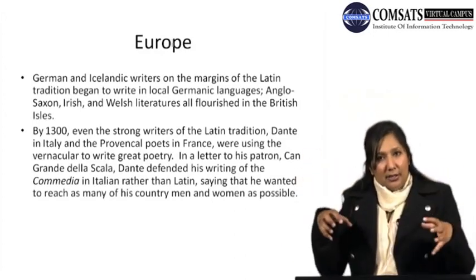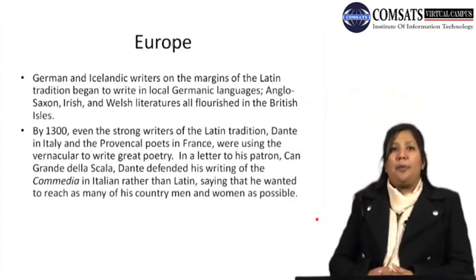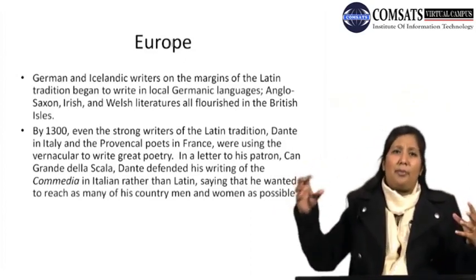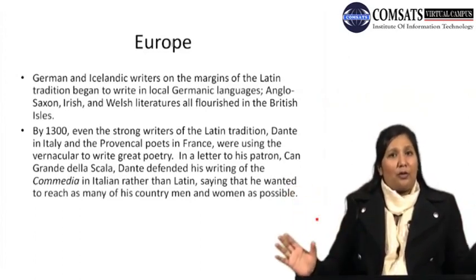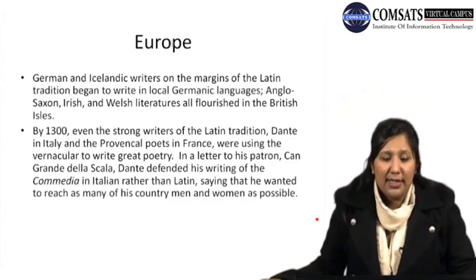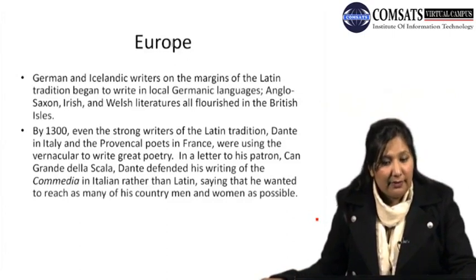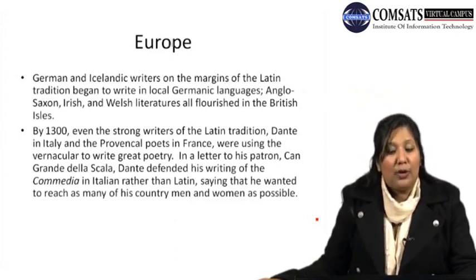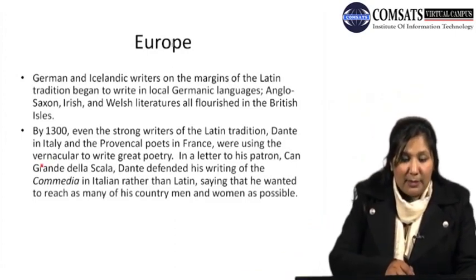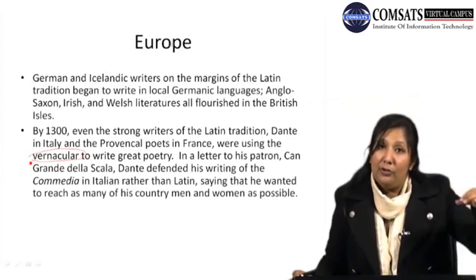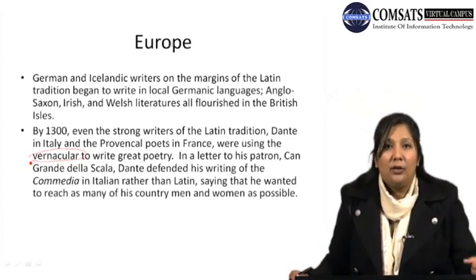There were different traditions and cultures in different parts of society. In India, language traditions came from Sanskrit, while in Europe there were two main groups: Germanic and Icelandic, coming from the family tree of Germanic languages. Anglo-Saxon, Irish, and Welsh literatures also flourished in the British Isles. By 1300, even strong writers of the Latin tradition — Dante in Italy and the Provincial poets in France — were using the vernacular to write great poetry. Vernacular is the native, local language of the people who can understand it.